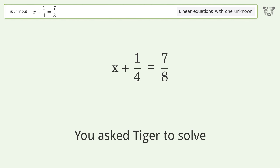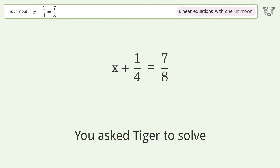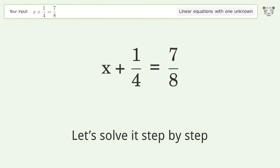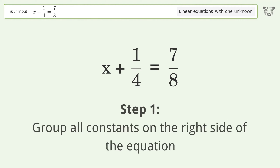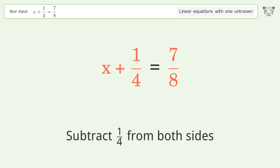You asked Tiger to solve this — it deals with linear equations with one unknown. The final result is x equals 5 over 8. Let's solve it step by step. Group all constants on the right side of the equation; subtract 1 over 4 from both sides.